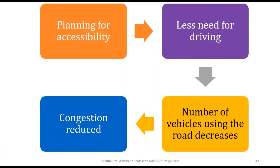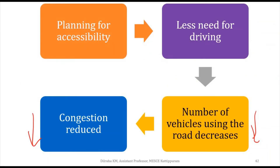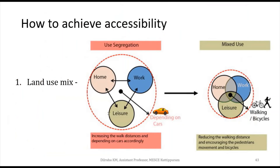When the number of vehicles reduces, congestion reduces, and that also gives us good mobility. So when all facilities are provided within reach, people will use walking or cycling to reach their destination, which ultimately reduces congestion and leads to more mobility. By considering these two planning perspectives, planning for accessibility is much better than planning for mobility.